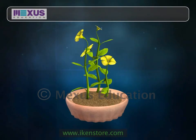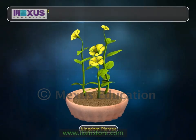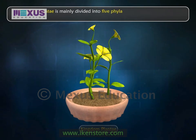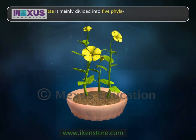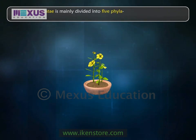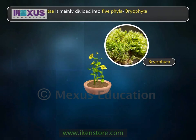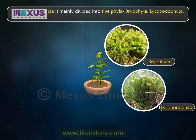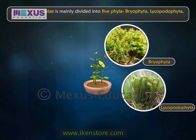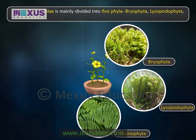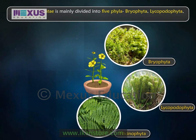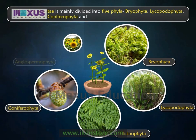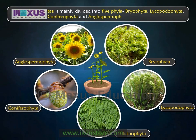Kingdom Plantae is mainly divided into five phyla: bryophyta, lycopodophyta, philicinophyta, coniferophyta, and angiospermophyta.